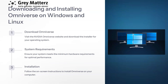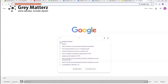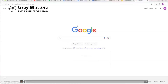So let's look at downloading and installing Omniverse on Windows and Linux. First, what are the requirements? You must have an NVIDIA GTX GPU, and your RAM must be more than 16GB — 16GB is the minimum, but I would recommend 32GB RAM. Other than that, it basically supports both Windows and Linux. Let's see a video on how to set up Omniverse on your local system.